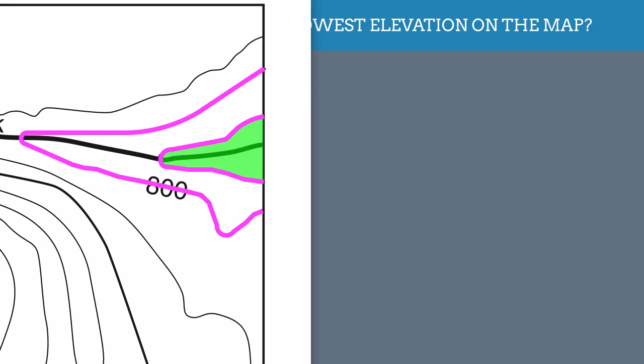Now again, I know it's lower than 700, but because there's no 600 line, the green area has to be between 600 and 700.